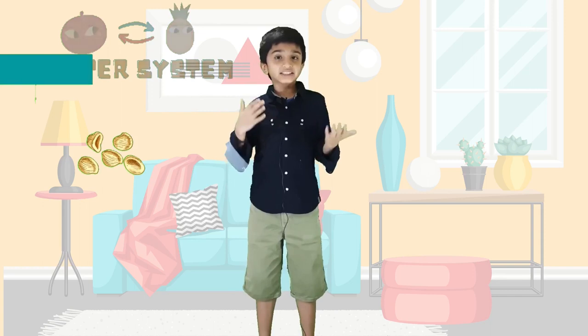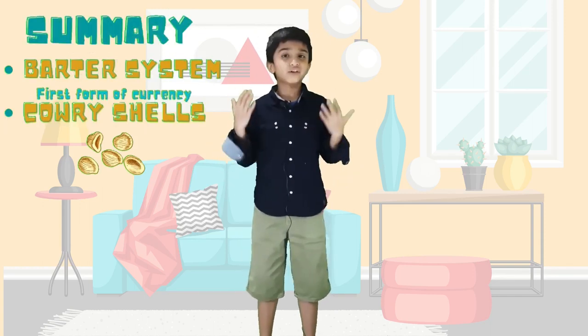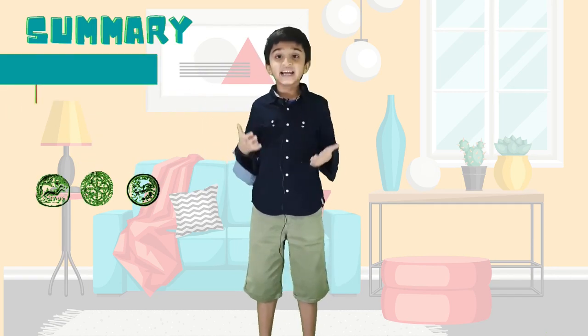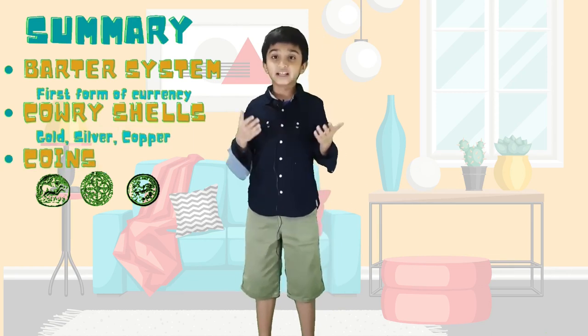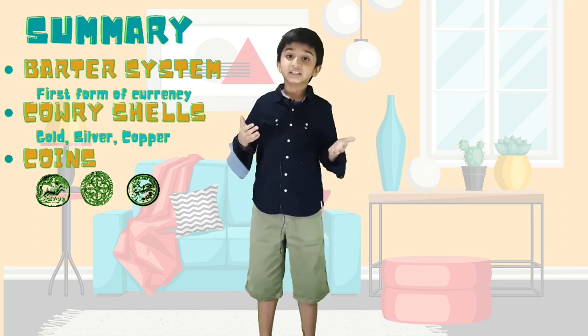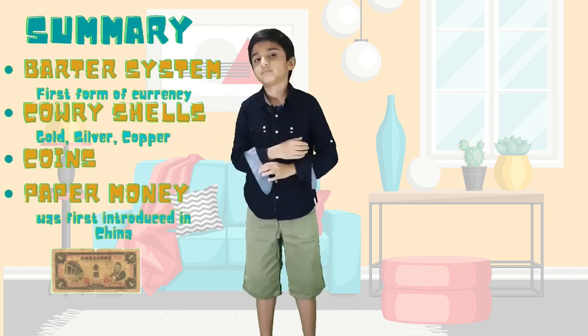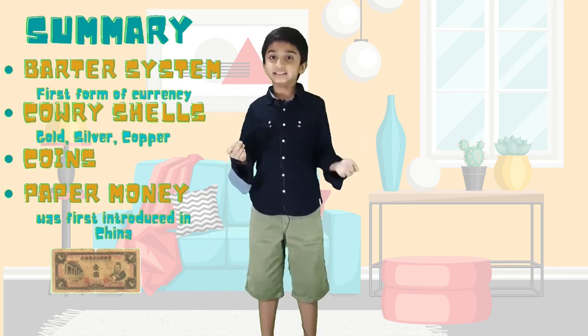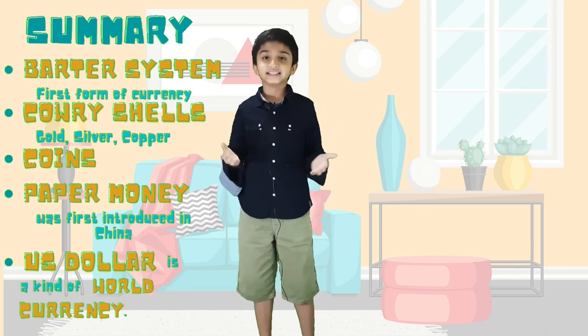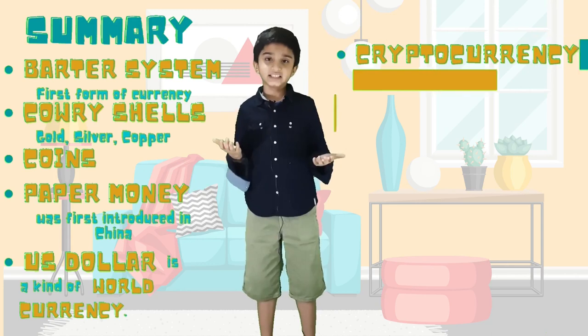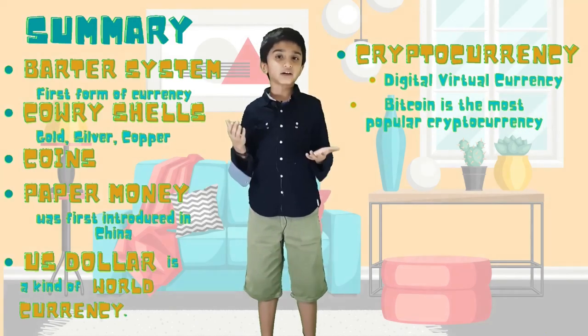That is a lot of information about money! We learned about the barter system and how it became more complex with more items, which led to the invention of money. Among the first types of money were cowrie shells, used thousands of years ago in Africa, India, and China. Then kings started minting coins made of copper, brass, silver, and gold. About 900 years ago paper money was first introduced in China. Now most countries have their own paper currencies and coins, the US dollar serves as a world currency for trade between countries, and the latest form is digital cryptocurrency — the most popular being Bitcoin.